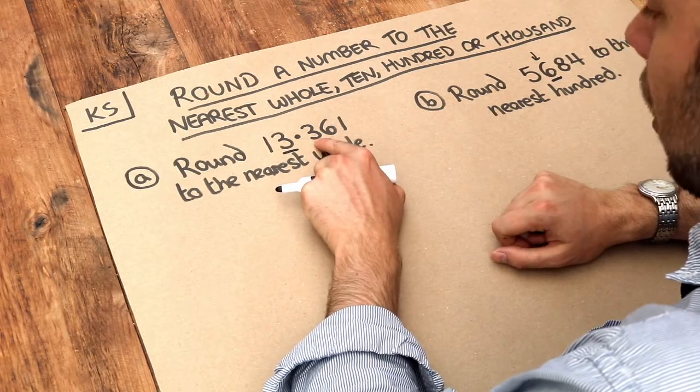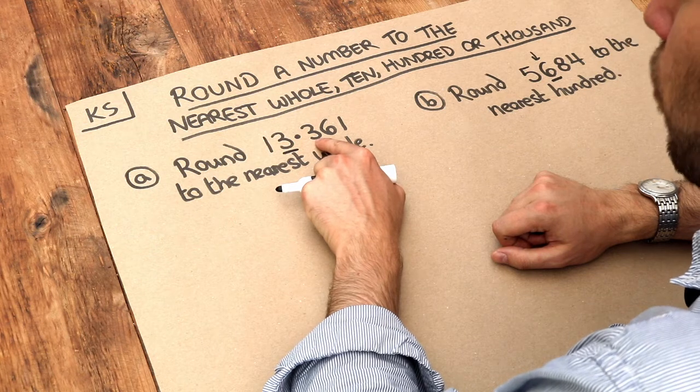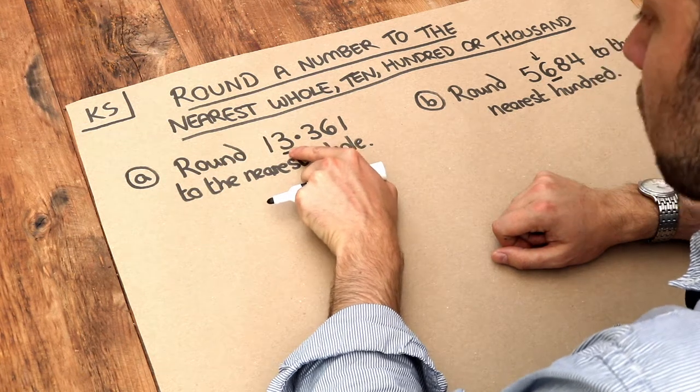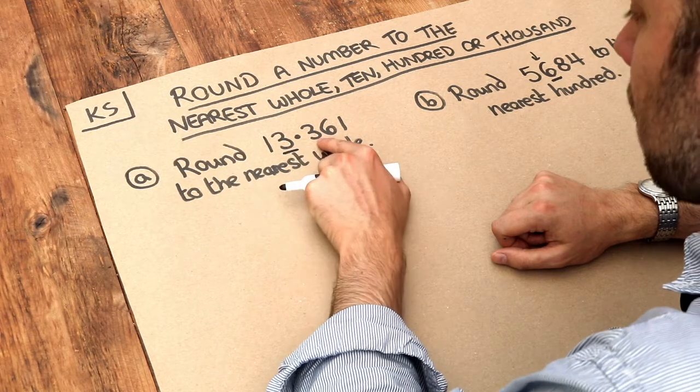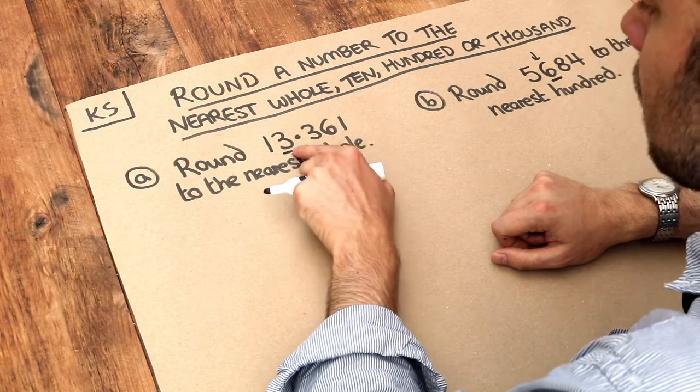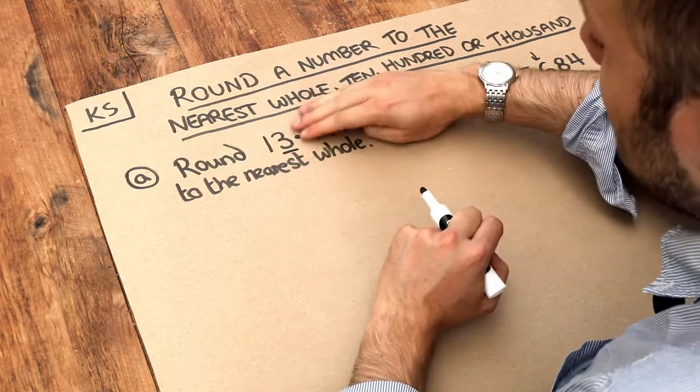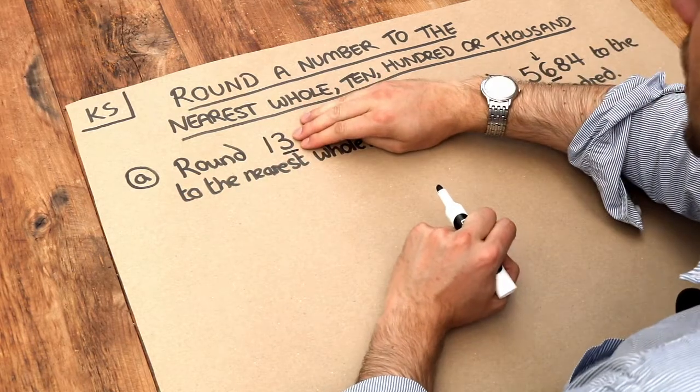Now if that digit after is 5 or more, then this is going to round up, and that's going to go up from 3 to 4. But if this is not 5 or greater, then that stays where it is, and then we discard everything after that digit.